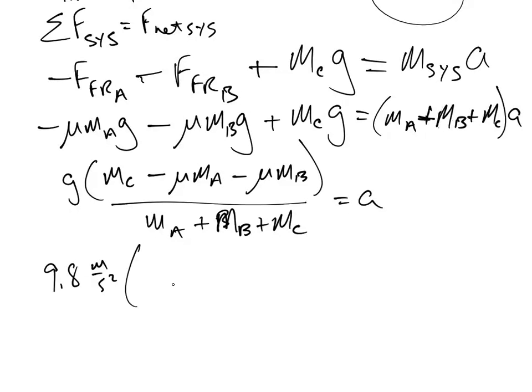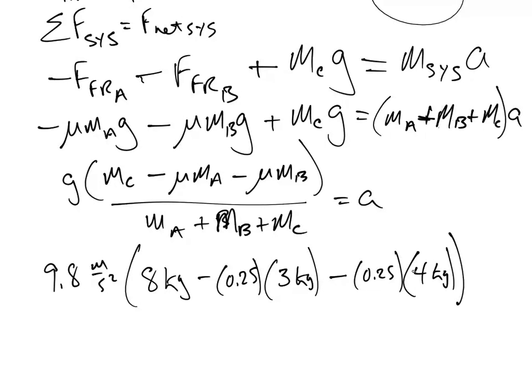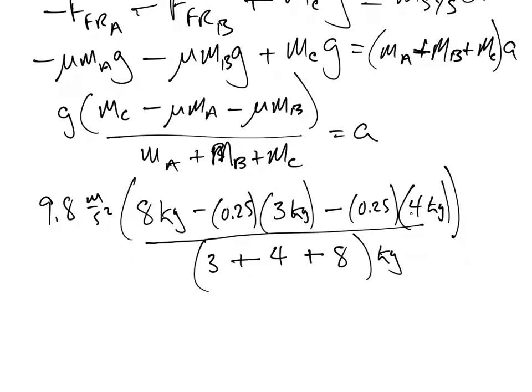9.8. mC, I believe, was 8 minus 0.25 times mA, and mA is 3 minus 0.25 times mB, which is 4. And that's all divided by 3 plus 4 plus 8. Kilograms. So what do we get for a? This all equals a. Let's plug it through our calculator.